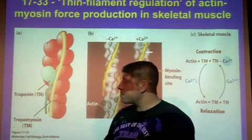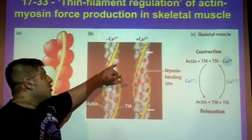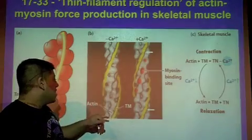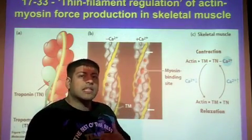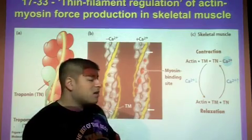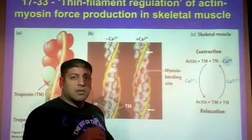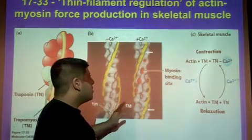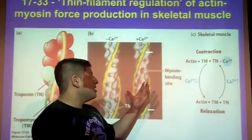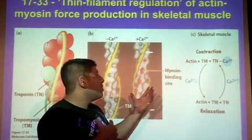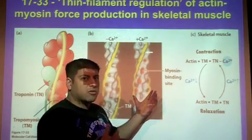In this diagram, gray represents actin and yellow is tropomyosin. Without calcium, tropomyosin lies along actin blocking myosin from interacting. When calcium is added, tropomyosin slides off of the actin filament in such a way that it exposes the actin to myosin. Now myosin can bind to actin and the crossbridge cycle can continue.